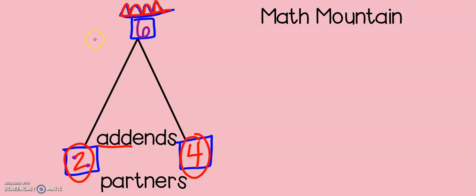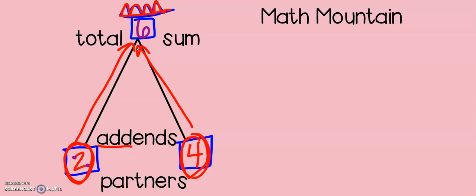So addends is not too tricky to remember. Now, the top number can also be called two different words. In first grade, you might have called it the total. You add your partners to get your total. There's another second grade word that we are also going to use, and that's the word sum. S-U-M. Sum, or our total, is our biggest number. We take our two addends to add to get to our sum. That is our math mountain.